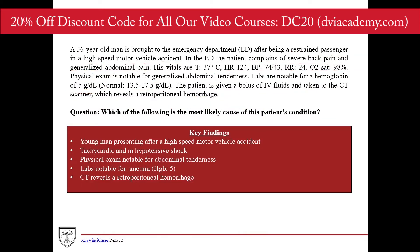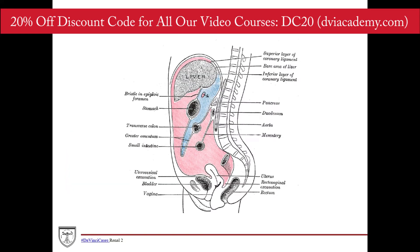To summarize the key findings: this is a young man presenting after a high-speed motor vehicle accident. He's tachycardic and in hypotensive shock. His physical exam is notable for abdominal tenderness. His labs show anemia with a hemoglobin of 5, and his CT reveals a retroperitoneal hemorrhage. To answer this question, you have to understand the peritoneum and the difference between intraperitoneal versus retroperitoneal.